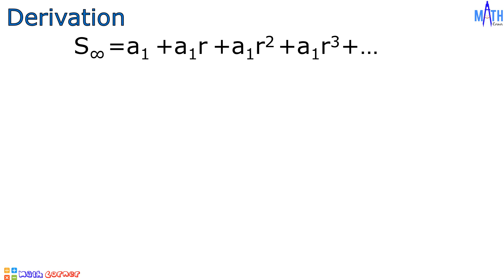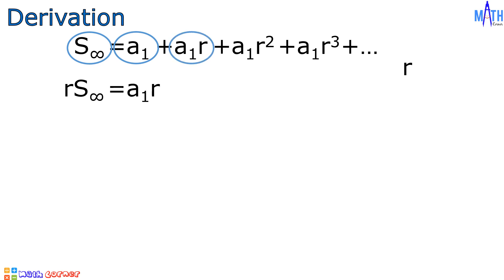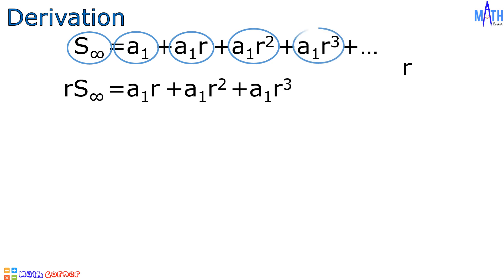Let us multiply this equation by the common ratio. Sum to infinity multiplied by r is equal to a sub 1 times r, plus a sub 1 times r squared, plus a sub 1 times r cubed, plus a sub 1 times r raised to the 4th power, and the pattern continues without end.